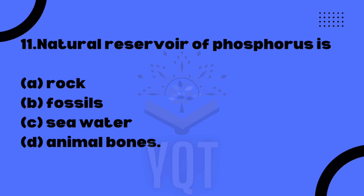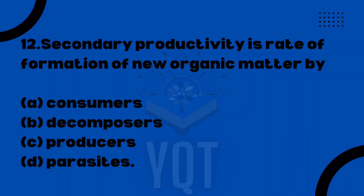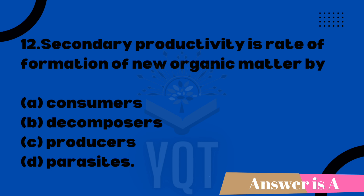Next: the natural reservoir of phosphorus is? Option A: rock. Option B: fossils. Option C: sea water. Option D: animal bones. The correct answer is Option A — rocks. Next: secondary productivity is the rate of formation of new organic matter by? Option A: consumers. Option B: decomposers. Option C: producers. Option D: parasites. That is a direct question — the correct answer is Option A, consumers.